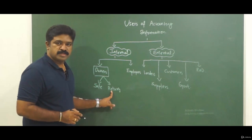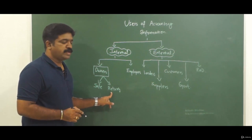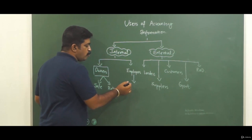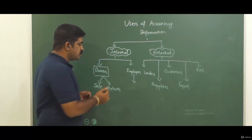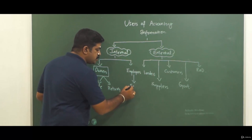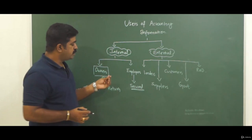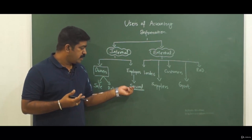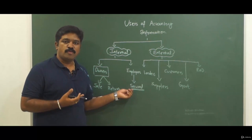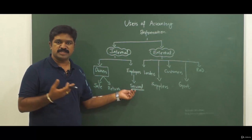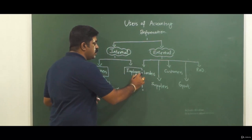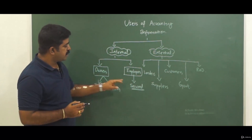So owners are very much interested in accounting information. Then employees are very much interested to know where their organization is going, to know whether they are secured, whether their organization is going in the right track, whether they are reporting good amount of profit. So that is on the long-term stability point, and they'll also be looking at this accounting information to know how much bonus they can claim, which is again linked with the profits. So we can say these two are internal groups: one is owners, the other one is employees.